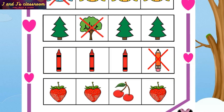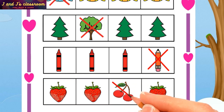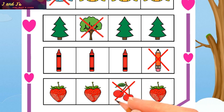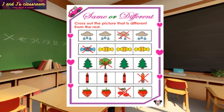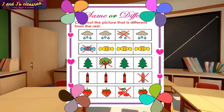Now see the last row — there are four red fruits. Which one is different in this group? Cherries! Yes, of course — cherries! Cross out the cherries. Nice, wow, you've all done a good job!